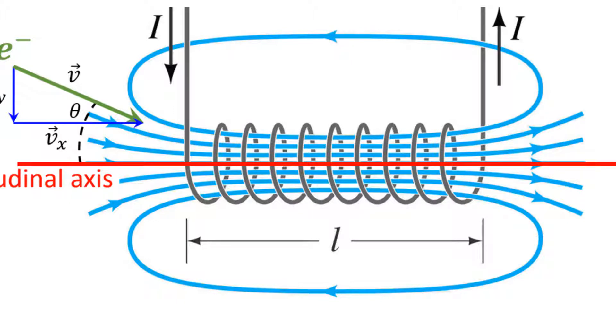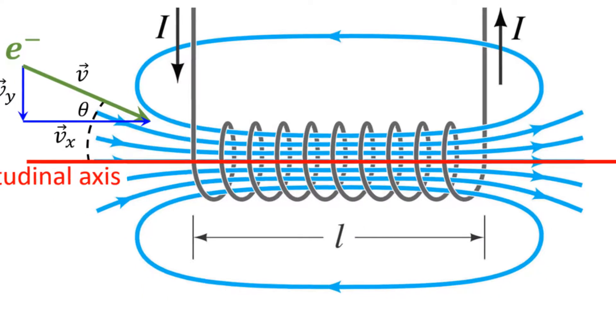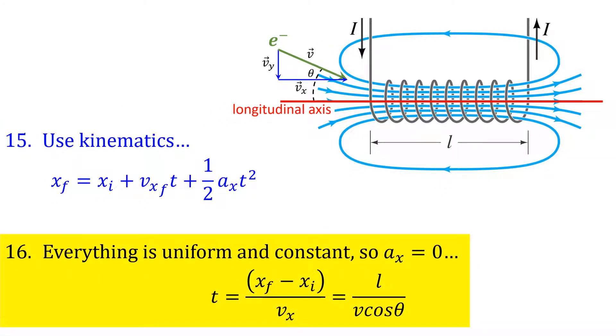We're considering the magnetic field everywhere in the solenoid to be perfectly uniform though. So here I have an expression for t, the amount of time it takes the electron to go from one end of the solenoid to the other. And that's it.